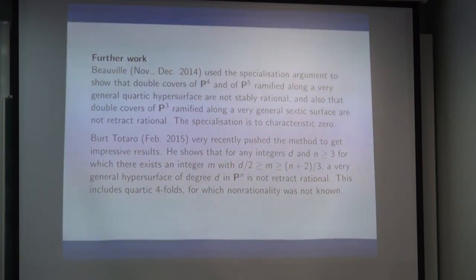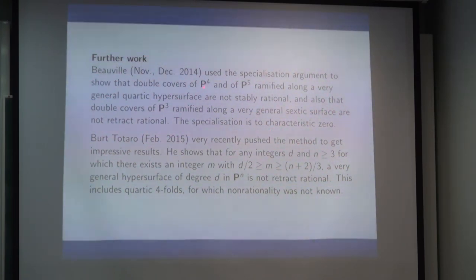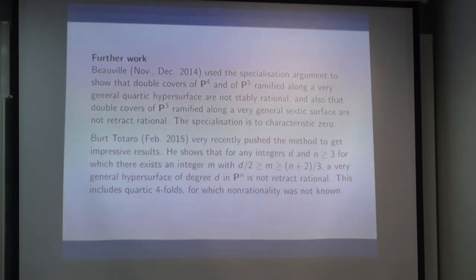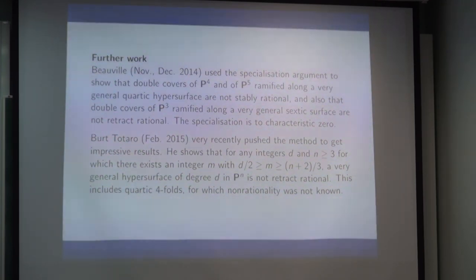Beauville used a specialization argument, working in a complex algebraic geometry setting. He showed that double covers of P⁴ and of P⁵ ramified along a very general quartic hypersurface are not stably rational. Also the double covers of P³ ramified along a very general sextic surface are not retract rational. In each case it is a problem of controlling the desingularization. The reason it stops at P⁴ and P⁵ is that going beyond makes the desingularization very complicated. Retract rationality means: there exist an open set U in x and a map factoring the identity through an open set V in some affine space Aⁿ of possibly larger dimension. If something is stably rational it certainly satisfies this; if the Brauer group is non-trivial, the variety is not stably rational and not even retract rational.